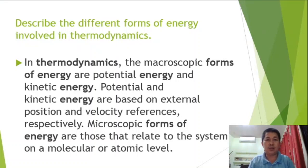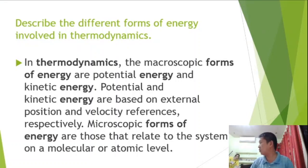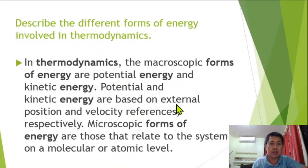Describe the different forms of energy involved in thermodynamics. In thermodynamics, the macroscopic forms of energy are potential energy and kinetic energy, based on external position and velocity references respectively. Microscopic forms of energy relate to the system at the molecular or atomic level.